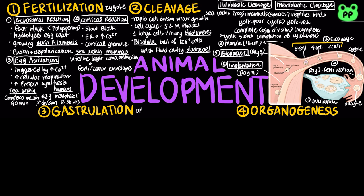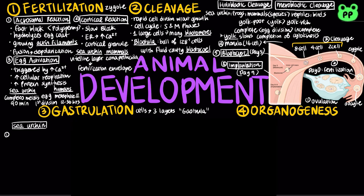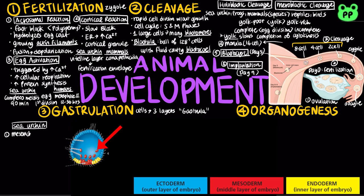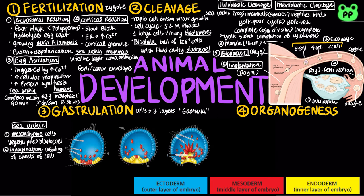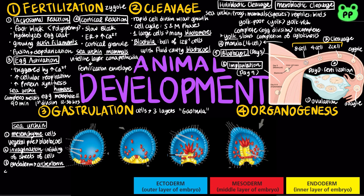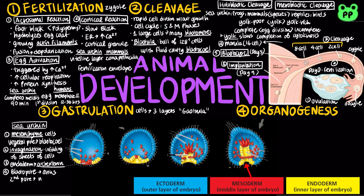Following cleavage, gastrulation rearranges the cells of the blastula into a 3-layer embryo called a gastrula. Gastrulation in sea urchin takes place in 4 main steps. First, mesenchyme cells migrate from the vegetal pole into the blastocoel. Next, the vegetal pole buckles inward in a process known as invagination. Endoderm cells then form the archenteron, the future digestive tube, which opens through the blastopore that will become the anus, and a second pore that will be the mouth. Therefore, sea urchin is classified as a deuterostome, meaning second mouth.